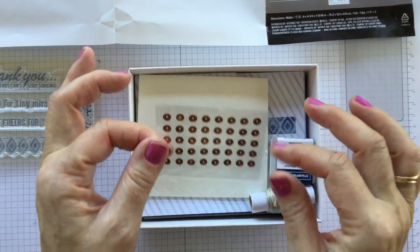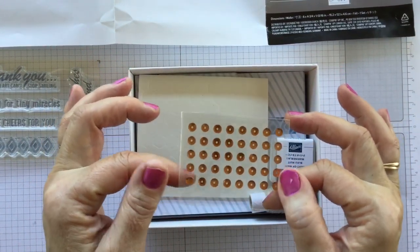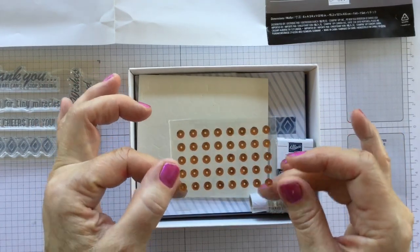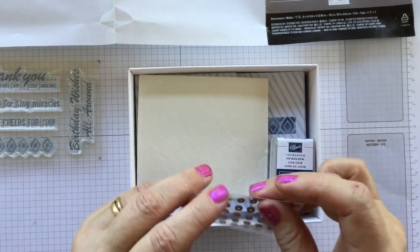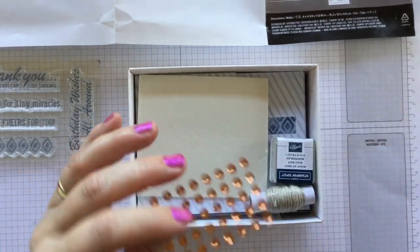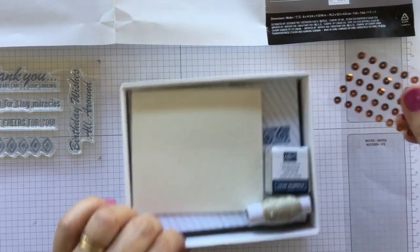You also get some beautiful little embellishments which are copper coloured sequins with little sticky dots on the back already so that you can use them straight up. So we will take them out of their little bag and pop them down here ready to use.